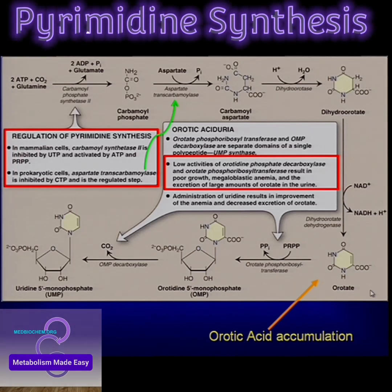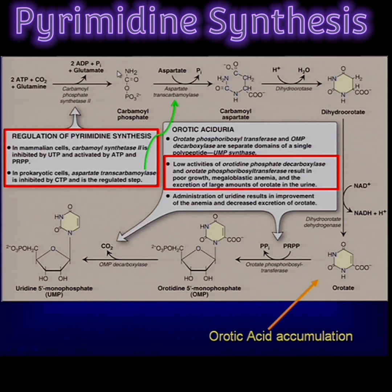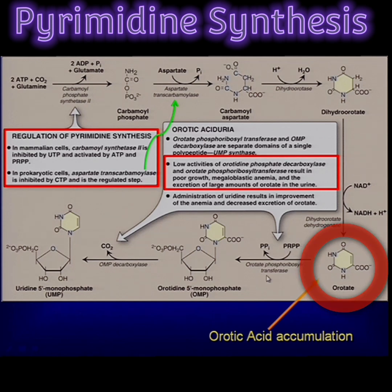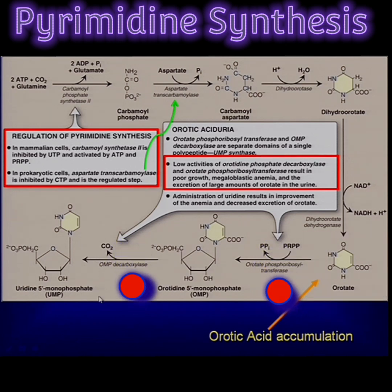From the rest of the synthesis, you need to focus on a couple of other enzymes. Don't worry about all of these here, except when you get to the last two steps. You form the compound orotate, you're going to add PRPP to the ring — that's your ribose phosphate — so now you have OMP, orotidine monophosphate, and then you have OMP decarboxylase to form UMP. These two enzymes — orotate phosphoribosyl transferase and OMP decarboxylase — are part of the same protein. You need to know them.